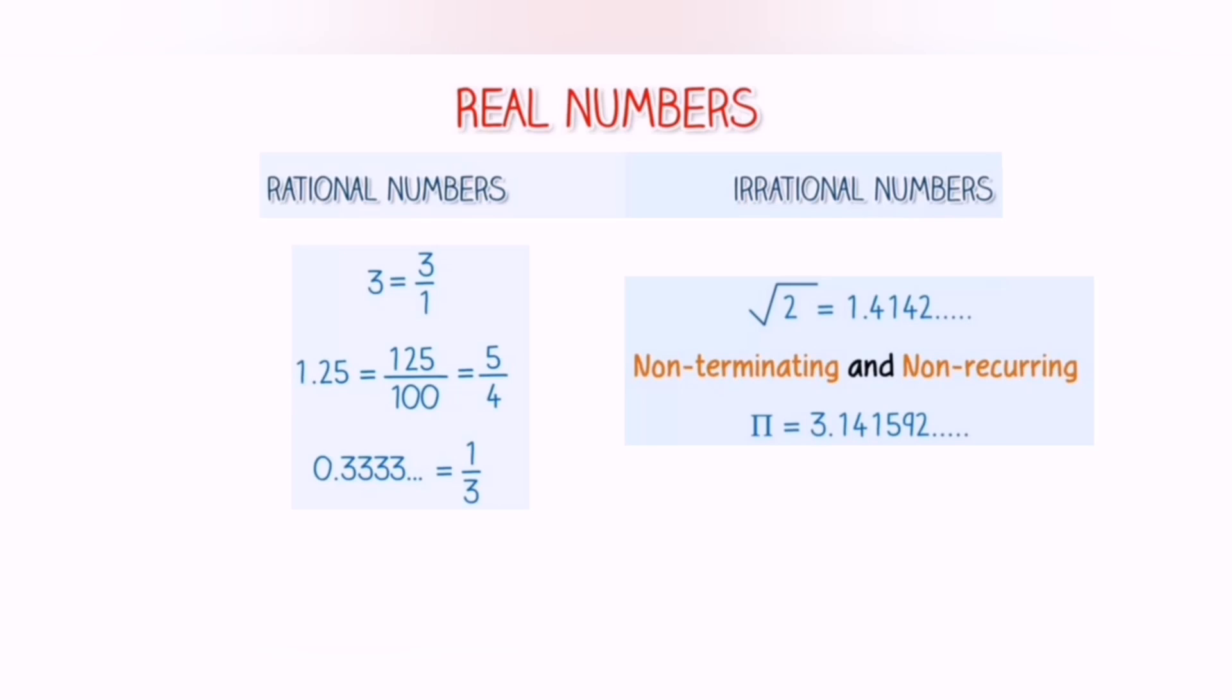Rational numbers are those that can be represented as a ratio of two integers with no common factors. Irrational numbers, on the other hand, cannot be expressed as a ratio of two integers. When expressed in decimal notation, they are non-terminating, non-recurring decimals.